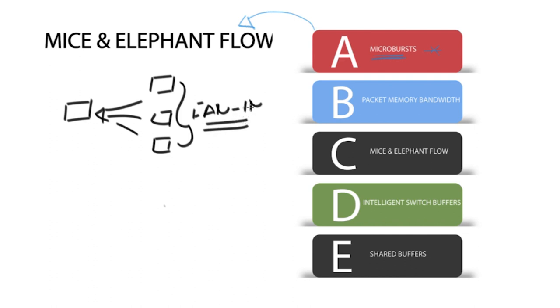One way to overcome this is to have sufficient buffering. It's critical for network devices to have sufficient packet memory bandwidth to handle these types of bursts.